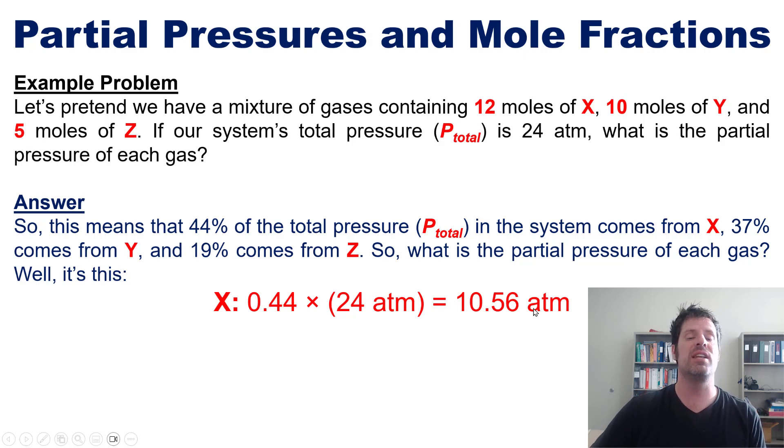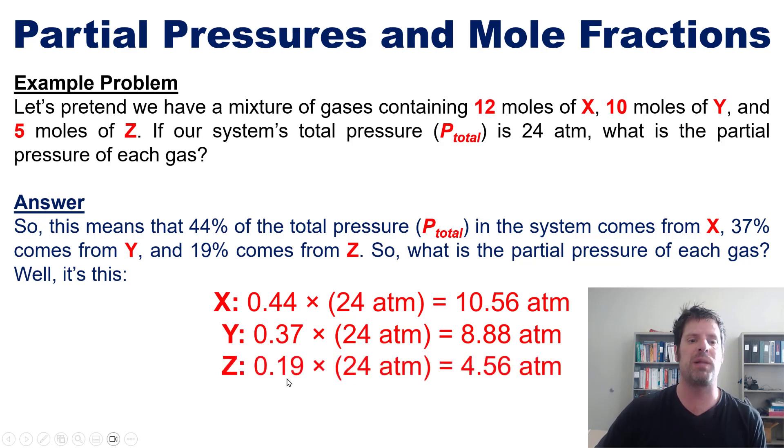That resulting number is the number of atmospheres that are coming off of X. By analogy, the number of atmospheres coming from Y is equal to 24 atmospheres multiplied by 0.37 because Y is 37 percent, and from Z is 24 multiplied by 0.19 because Z's percentage is 19 percent. These are the individualized percentages of X, Y, and Z and hence the answer to our question.